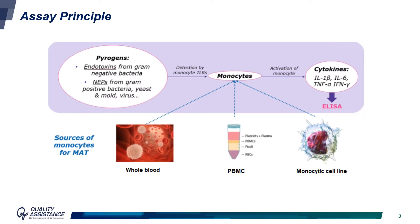Indeed, when pyrogens enter into the organism, they are detected by monocytes through their toll-like receptors. After the interaction, monocytes release pro-inflammatory cytokines, such as IL-1-beta, IL-6, TNF-alpha, or IFN-gamma. In the monocyte activation test, different types of cells can be used: whole blood, peripheral blood mononuclear cells, or a monocytic cell line. After incubation of monocytes in the presence of the products, cytokines are detected using an immunoassay such as ELISA.